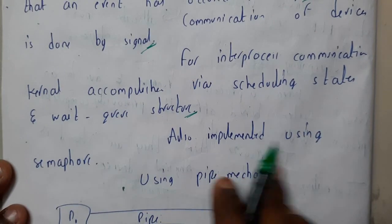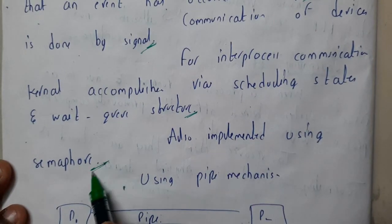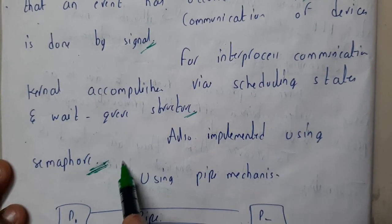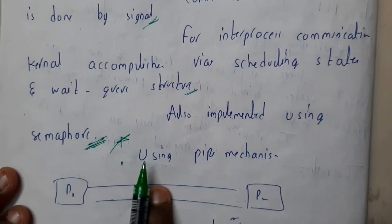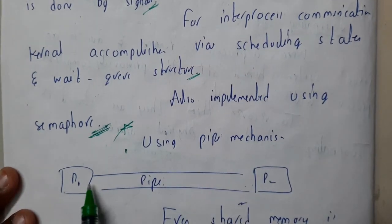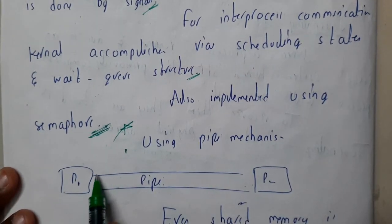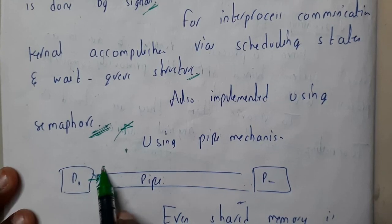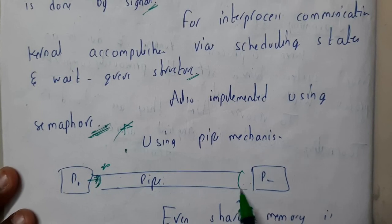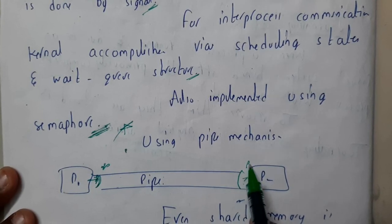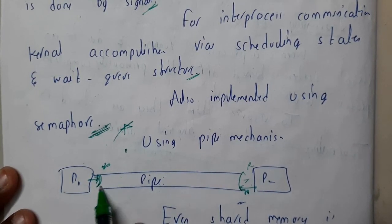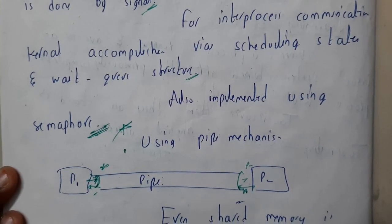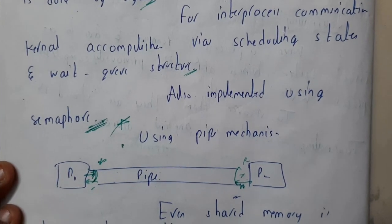Implementation is also done using semaphores for synchronization. Here we will also be using the pipeline mechanism. The pipeline mechanism is where the output of process one is given as input to process two, or process two's output is given as input to process one — either state can be a pipeline.